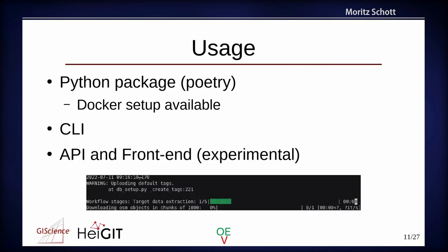How can you use the tool? It's a Python package, so you can download the source and build it yourself — we're using Poetry to do that. We also provide a Docker setup, so you can just get the Docker building procedure and it will set up everything for you. We have a CLI for the project, which is currently our main focus — the interface in the command line. But we're also looking into an API front-end; we have set something up and I will share it with you later, but it's currently experimental, so please don't crash the server.